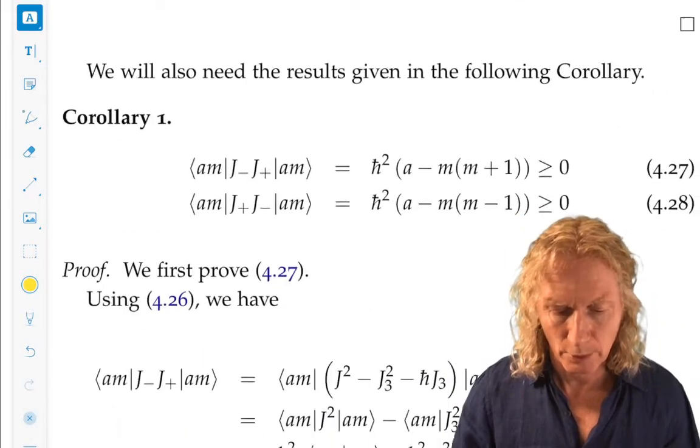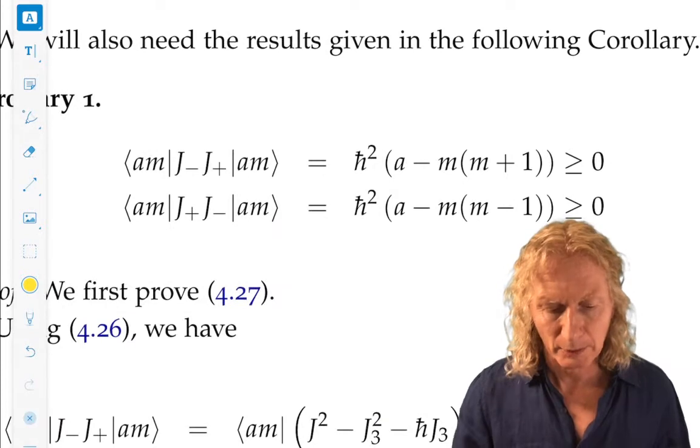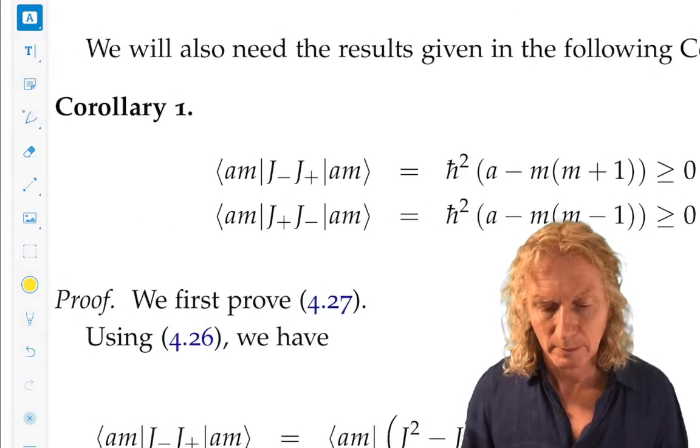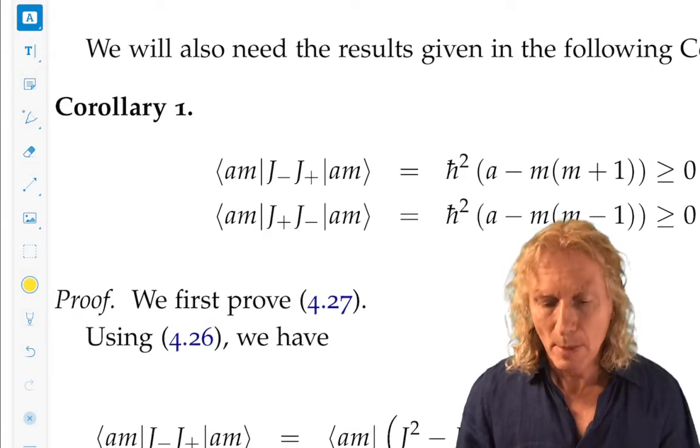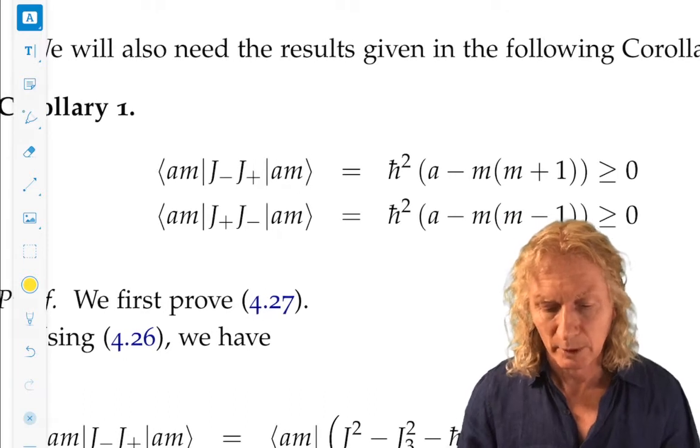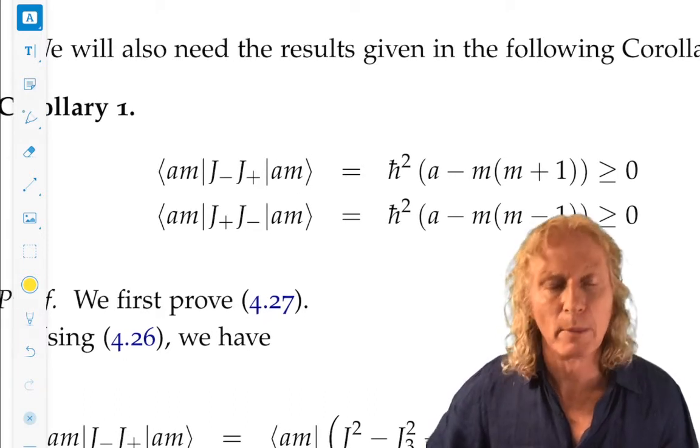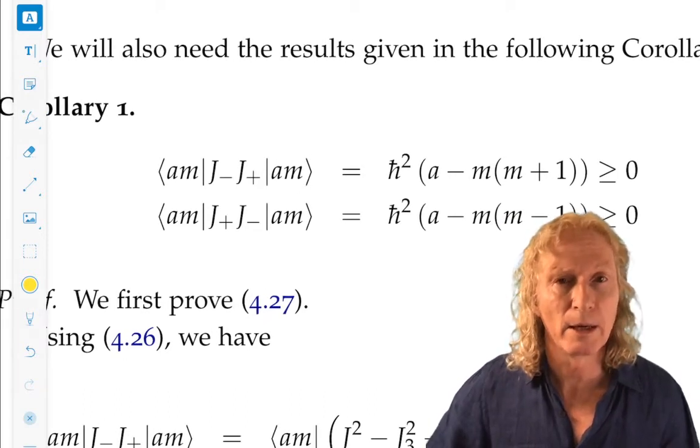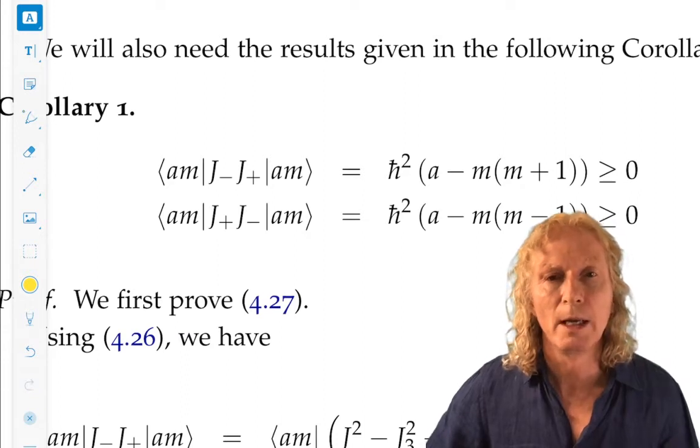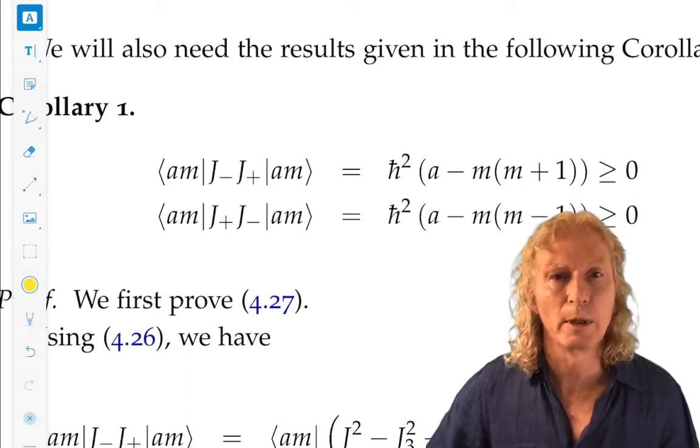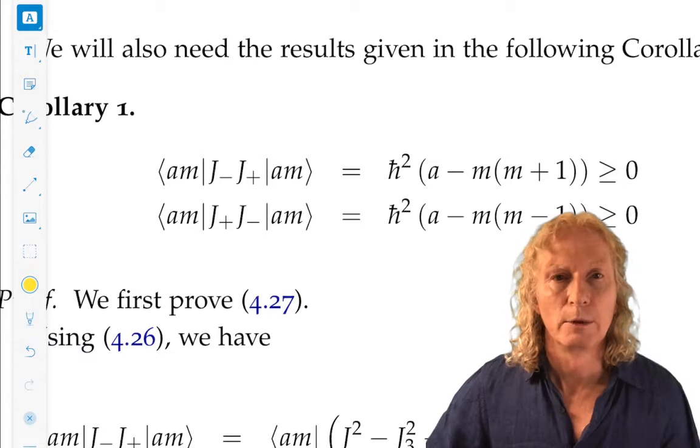But equally important, remember last time, is this corollary. This gave us bounds - this had to be greater than or equal to 0. This gave us bounds on A, the eigenvalue corresponding to J squared, and M, the eigenvalue corresponding to J3.